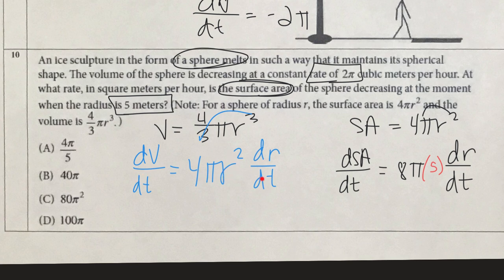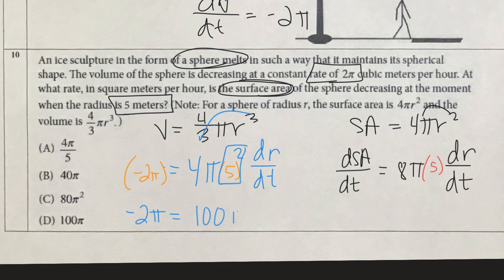So a little simplifying: -2π equals, 5² is 25, 25 times 4 is 100π(dr/dt). So when I divide both sides by 100π, I get -π/50 is the rate at which my radius is changing with respect to time.